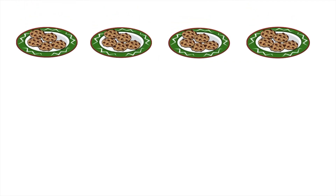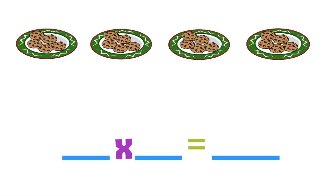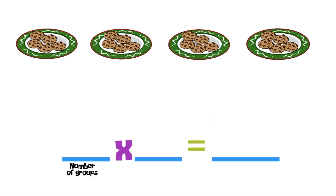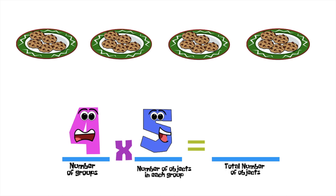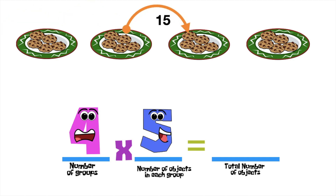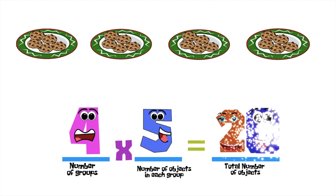How about if we have this? To find the total number of cookies, we need to write the multiplication sentence first. The first factor is the number of groups — that's 4. The second factor is the number of cookies in each plate — that's 5. So, 4 times 5: let's use skip counting by 5 — 5, 10, 15, 20. So, 4 times 5 is equal to 20.